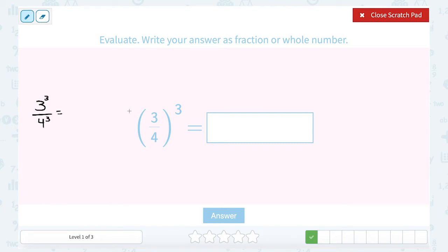3 to the third power, or 3 times 3 times 3 gives us 27. 3 times 3 is 9, times 3 again is 27. And 4 to the third power gives us 64. 4 times 4 is 16, times 4 again is 64.